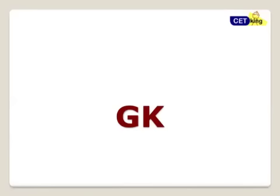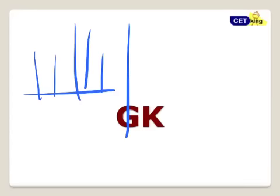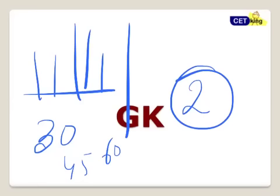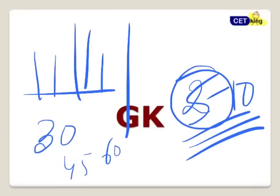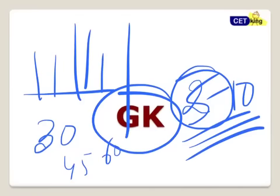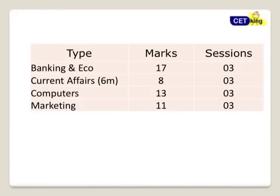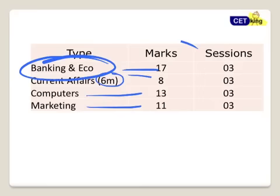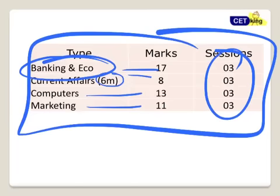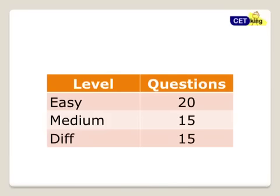Moving to the last part — the GK section. Before that, let's compare two things: how much time you take to solve a DI question — 30 to 60 seconds. But how much time to solve a GK question — 5 to 10 seconds. That's the advantage of GK. GK is ignored by everyone but it's very very scoring — quick marks, easy. 17 questions on banking and Indian economy. A lot of questions were on budget, so please go through the budget. Current affairs — last 6 months, 8 questions. Computers — 13 questions. Marketing — also questions there. If you know something you can easily answer; if you don't know, it will be very difficult.